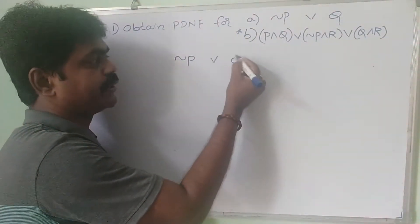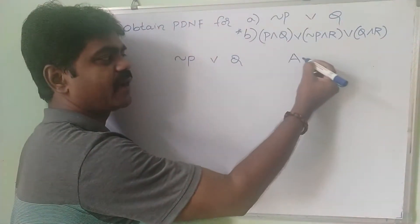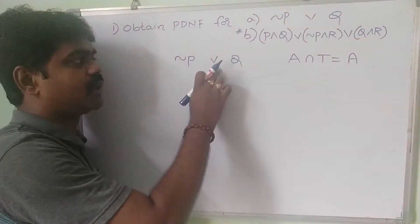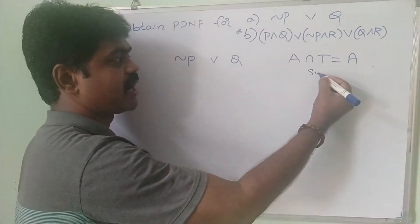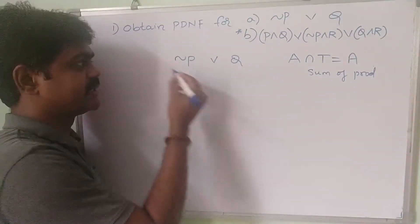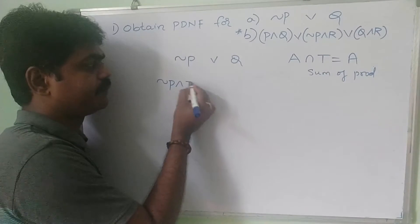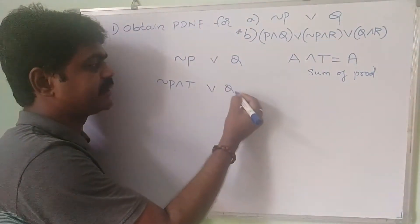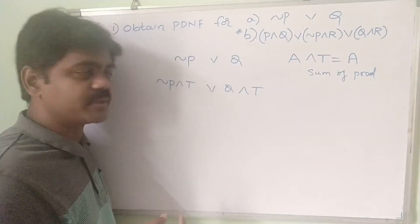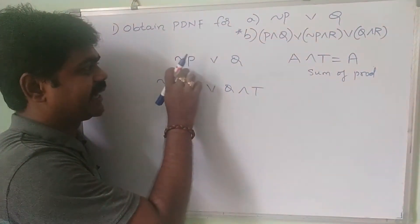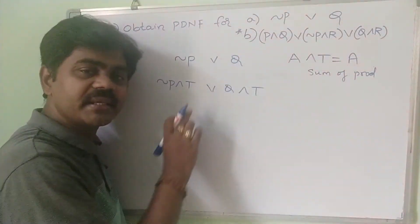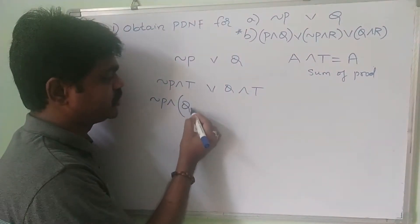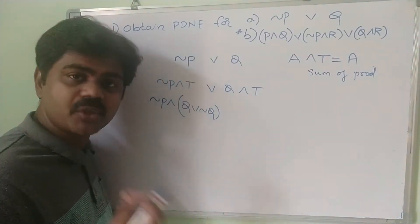The first example is: negation p OR q. We have the rule a AND true equals a. So for DNF, which is a sum of products, I will write negation p AND true. As per the rule, negation p AND true is nothing but negation p. Similarly, q AND true is nothing but q. Here I have two variables, p and q. For negation p, q is missing, so I write q OR negation q in the place of true.